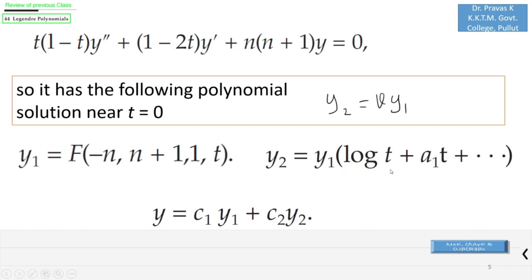However, since log t is a part of y₂, we can see that to ensure the solution is bounded near x = 1, we can obtain such a solution only when c₂ = 0. So all the solutions that are bounded near x = 1 are of the form y = c₁y₁, that is the multiples of y₁.